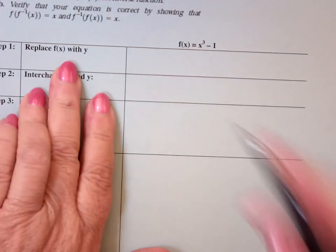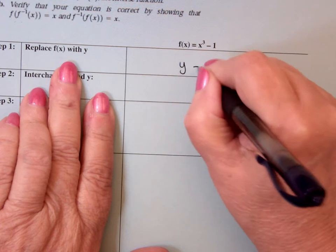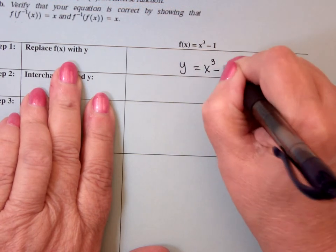Find the inverse, so replace f of x by y, so y equals x cubed minus 1.